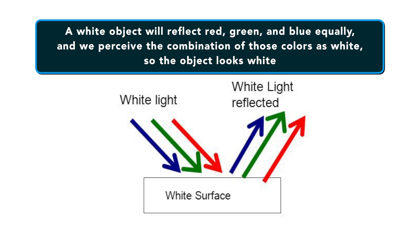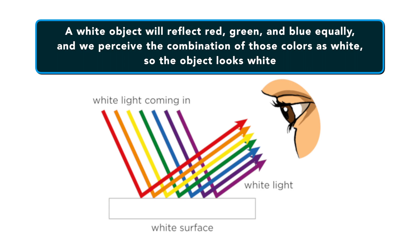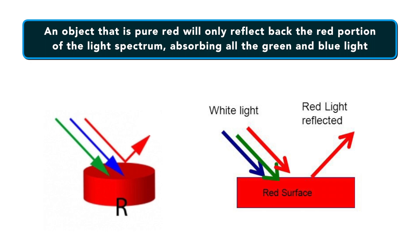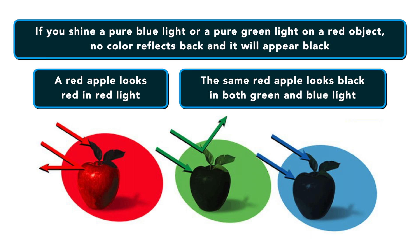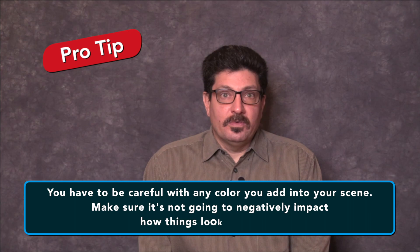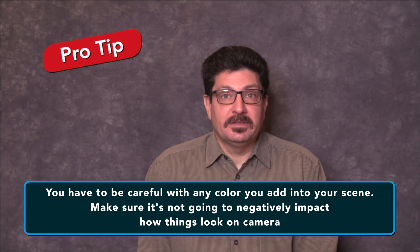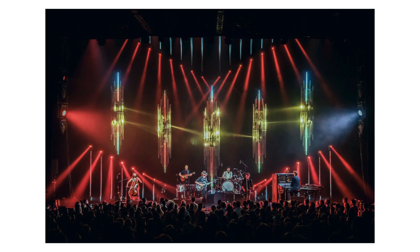A white object will reflect red, green and blue equally, and we perceive that combination as white. However, an object that is pure red will only reflect back the red portion of the light spectrum, absorbing all the green and blue — so if you shine a pure blue or pure green light on a red object, no color reflects back and it actually appears black. You have to be careful with any color you add into your scene. Make sure it's not going to negatively impact how things look on camera.